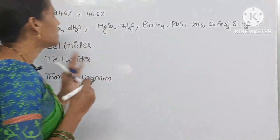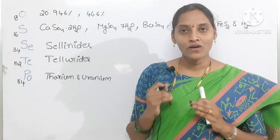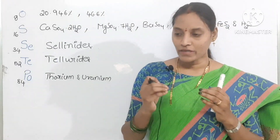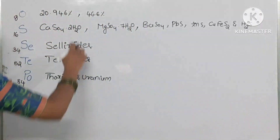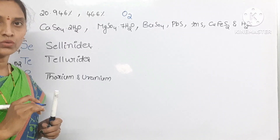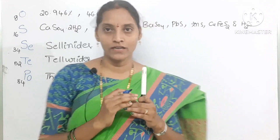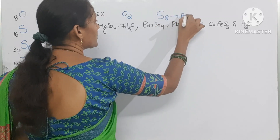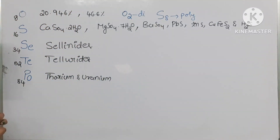All group 16 elements show allotropic nature — that is the reason they do not exist in a single atomic state. Oxygen exists in a diatomic state (O₂), while sulfur exists in a polyatomic state.